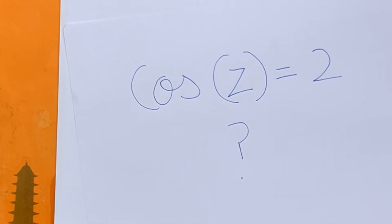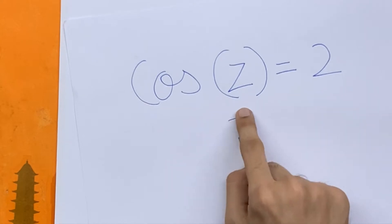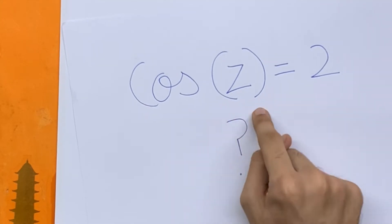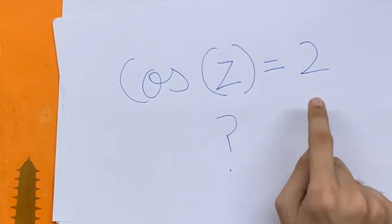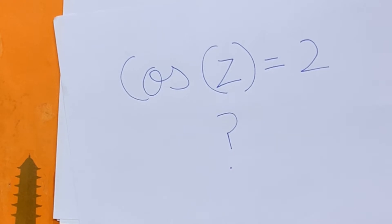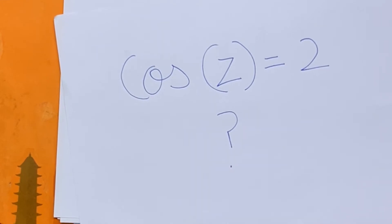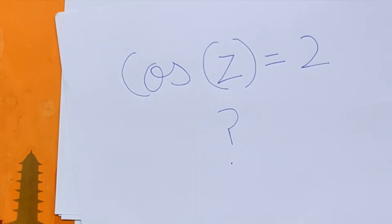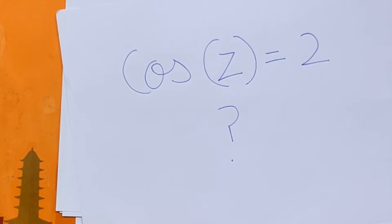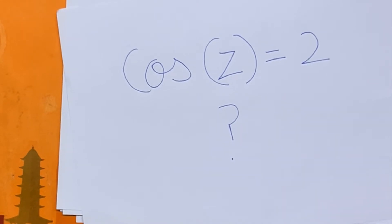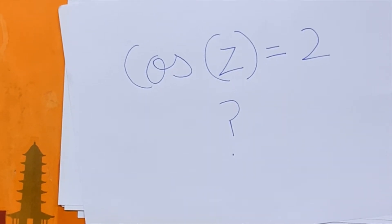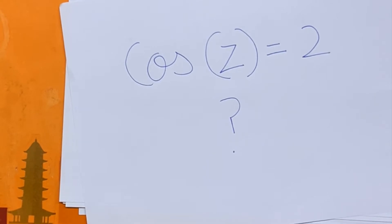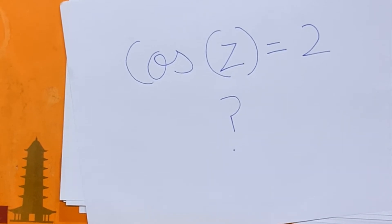Hey guys, I'm back with another question and today we're going to be finding what the solution to this equation is: cos of z is equal to 2. As you might have assumed, we're again going to be using complex numbers here and Euler's formula. If you haven't checked my latest video out, go and see it because I'm going to be using the stuff I proved in that video here.